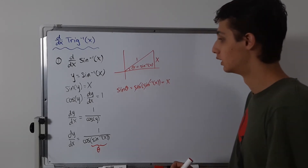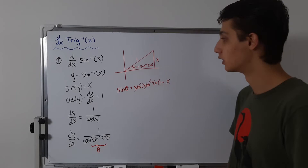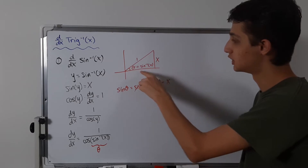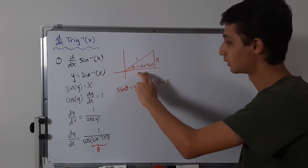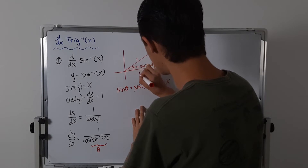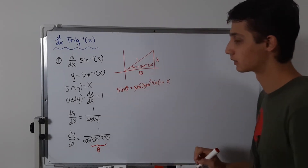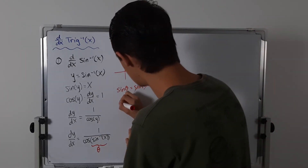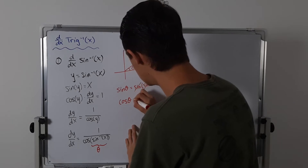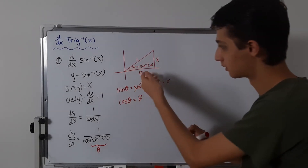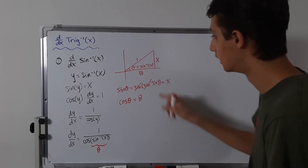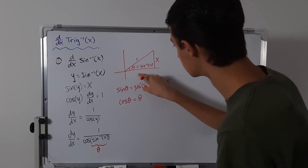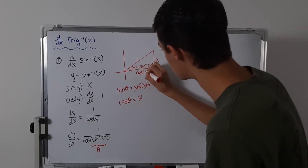So that helps us a lot. What we're doing is trying to find the cosine of this angle, which is adjacent over hypotenuse. So we just have to find what this adjacent side is — I'll call it B. Cosine of theta is simply equal to B, and we can replace that with cosine of theta.